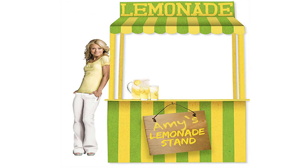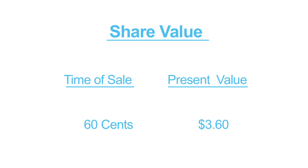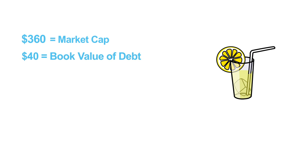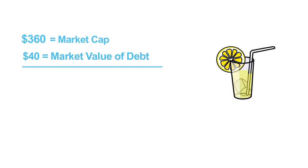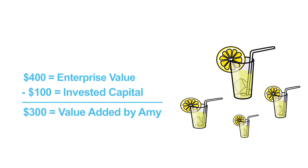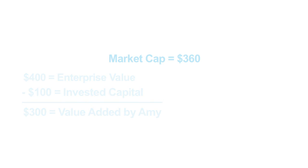Amy does a great job and her lemonade stand takes off. It does so well that shares now trade at $3.60 per share — in other words, the market values the equity at $360. We call this the market cap. Because Amy has a good credit standing, the book value of debt equals the market value of debt. The enterprise value is its market cap plus its market debt: $360 plus $40, which is $400. Remember that the invested capital was only $100, so the difference between the enterprise value and the invested capital is $300.